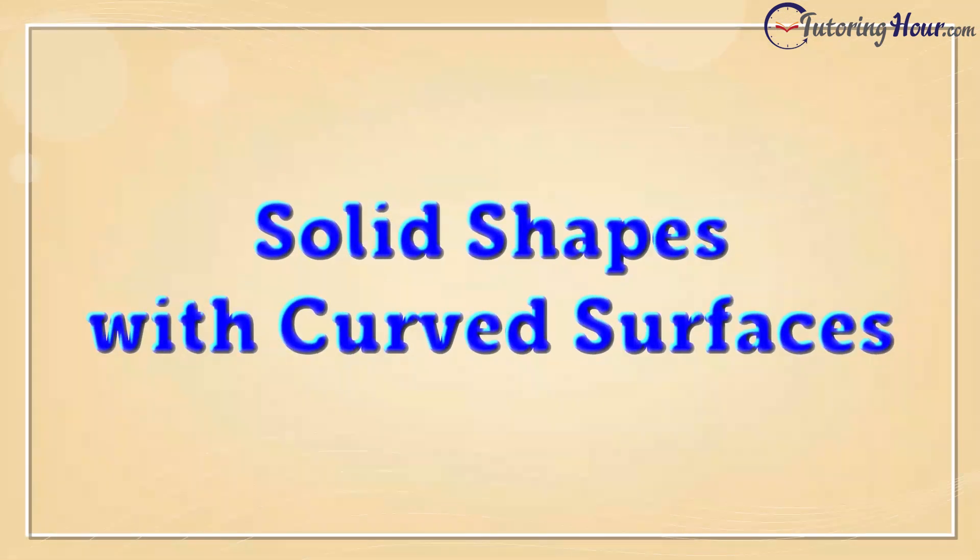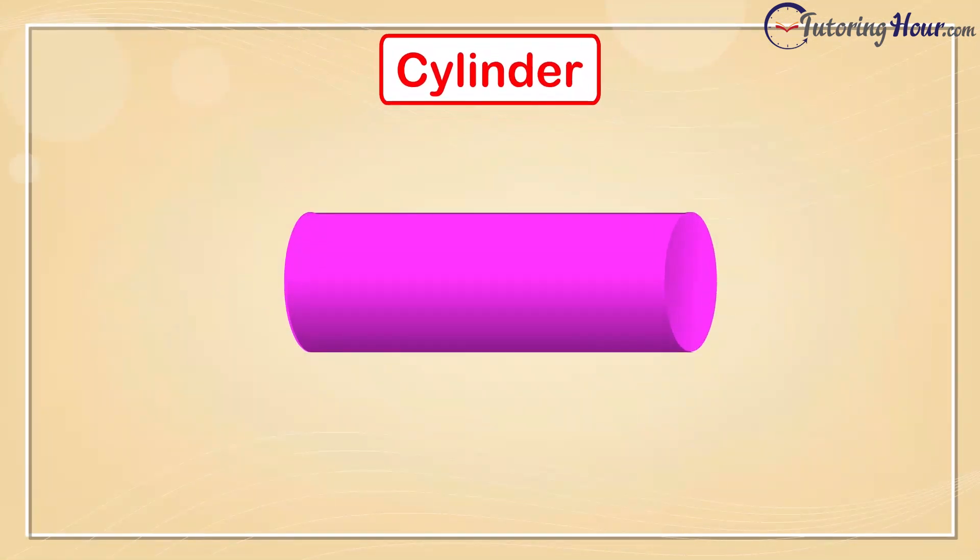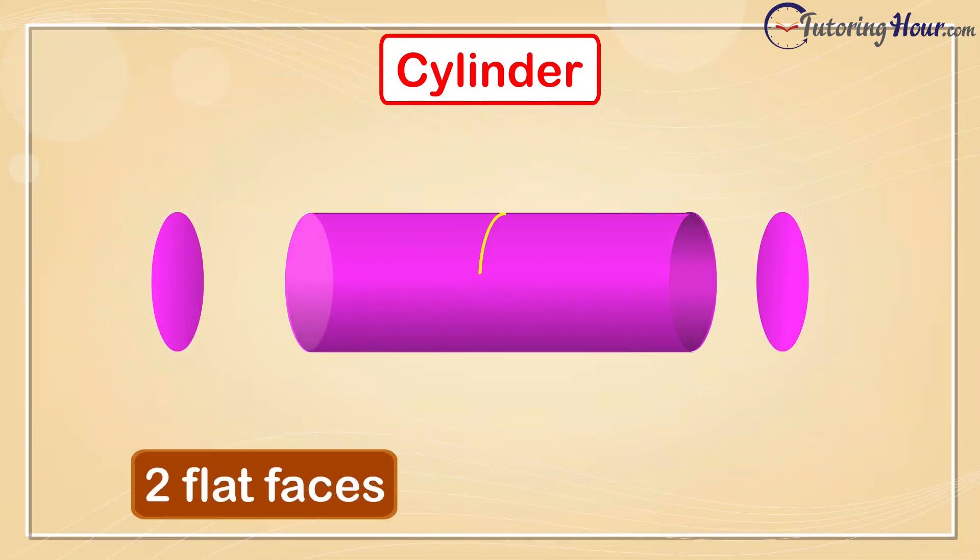Let's move on to solid shapes with curved surfaces. Here comes the cylinder, our next solid shape. A cylinder has 2 flat faces and a curved surface.